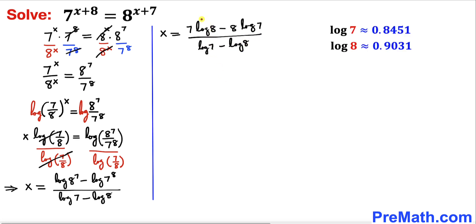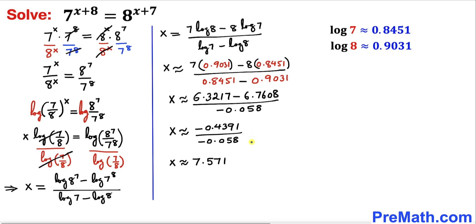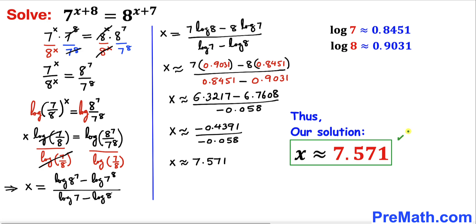Using a scientific calculator, log 7 is approximately 0.8451 and log 8 is approximately 0.9031. Substituting these values in and completing the calculations, x turns out to be approximately equal to 7.571.